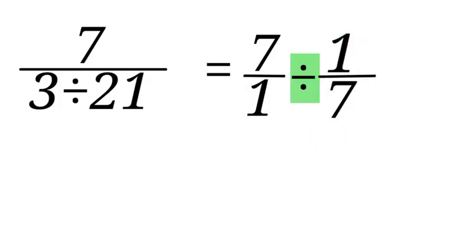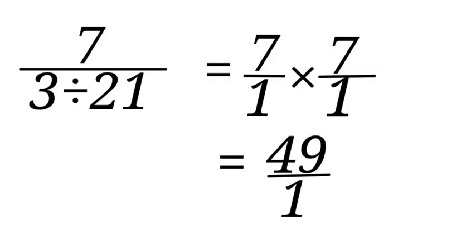We have to change this division sign to multiplication sign. So when we change, we will take the denominator of this fraction and bring the numerator 7 over 1 to the denominator. 7 over 1 times 7 all over 1. So 7 over 1 times 7 over 1 is 49 over 1 equals to 49.